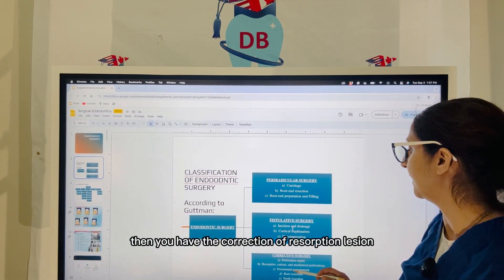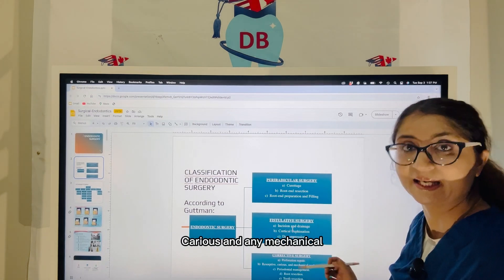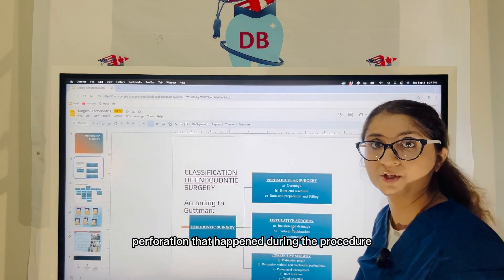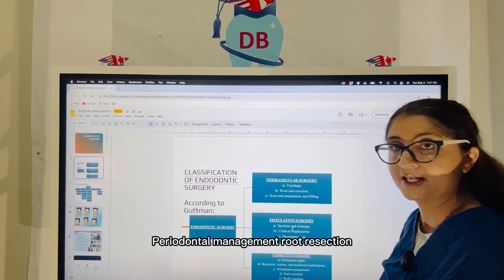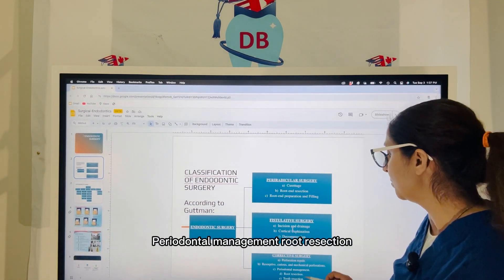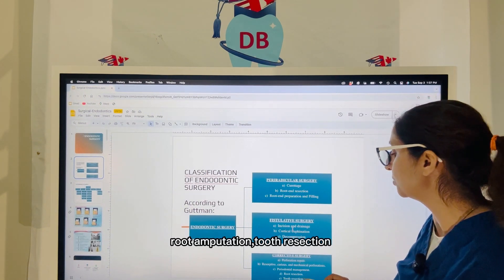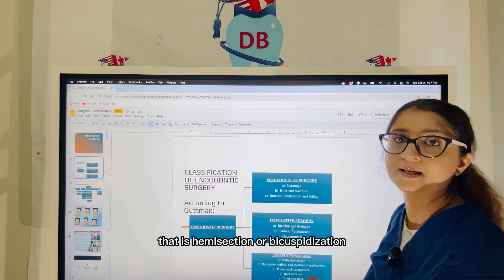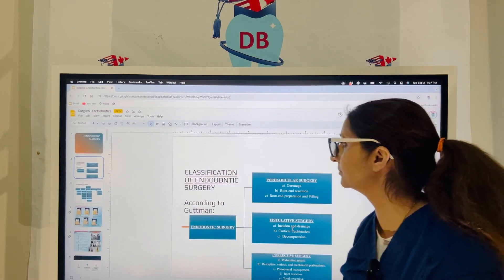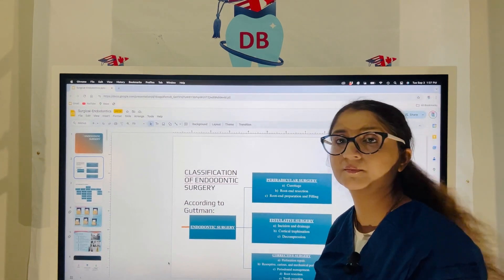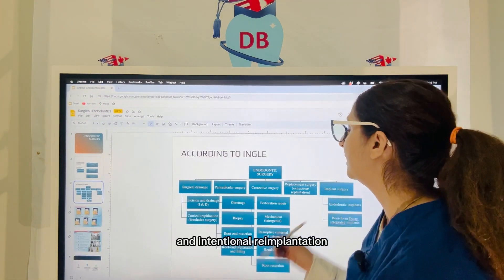Then you have the correction of resorptive lesion, caries, and any mechanical perforation that happened during the procedure, periodontal management, root resection, root amputation, tooth resection — that is hemisection or bicuspidization — and intentional re-implantation.